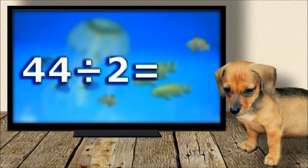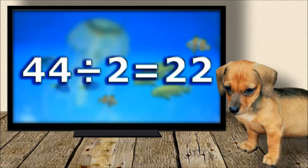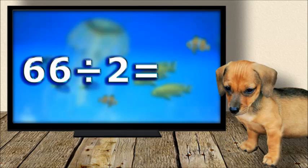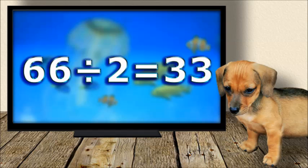Forty-four divided by two equals twenty-two. Sixty-six divided by two equals thirty-three.